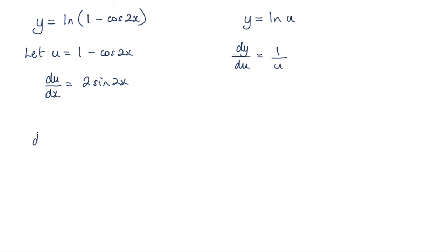Now I'm trying to find dy by dx, and dy by dx is dy by du multiplied by du by dx, which is 1 over u times 2 sine 2x.